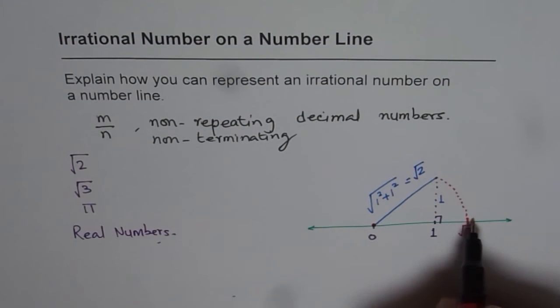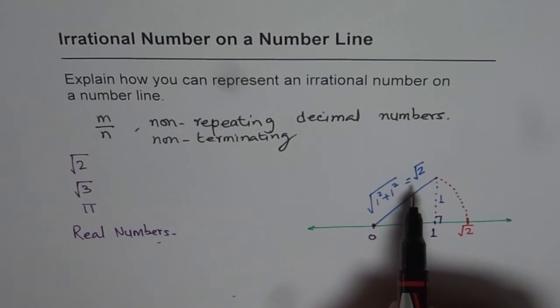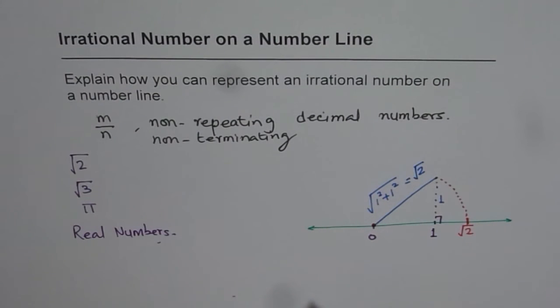And so we get square root 2 on the number line. Since you can show this number on a number line, it is a real number. So I hope that helps you to understand the concept.